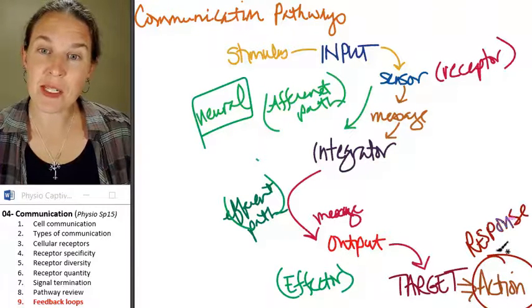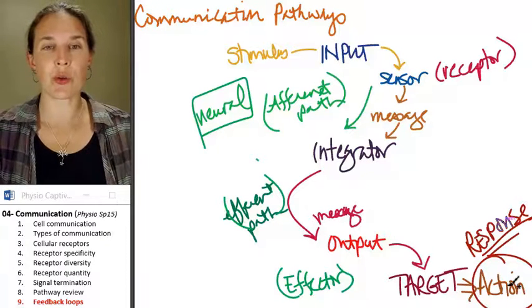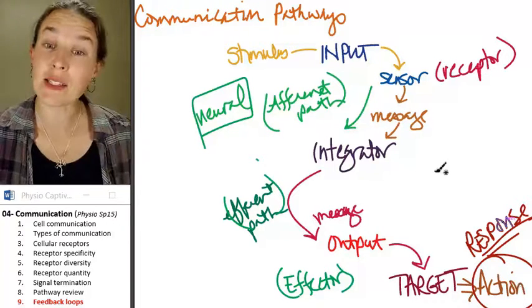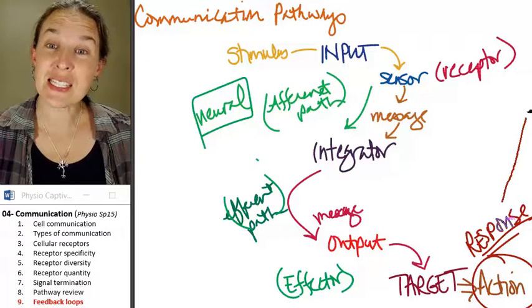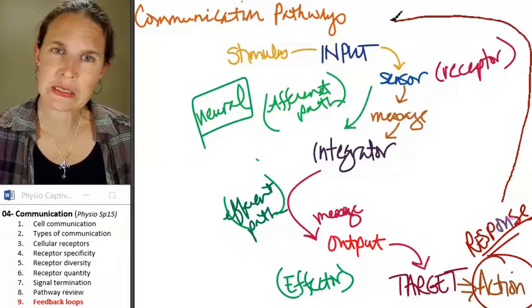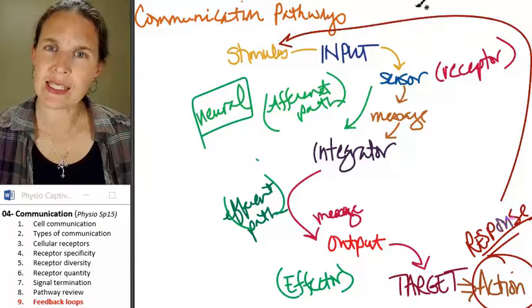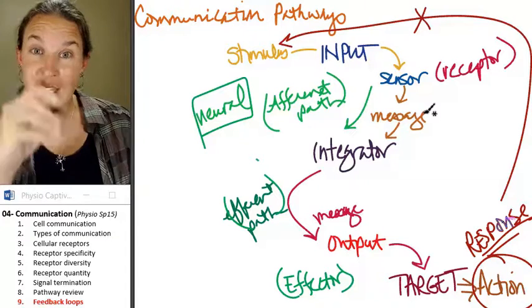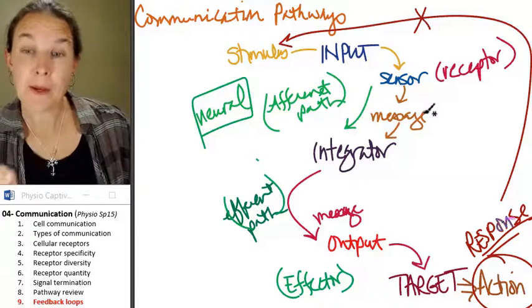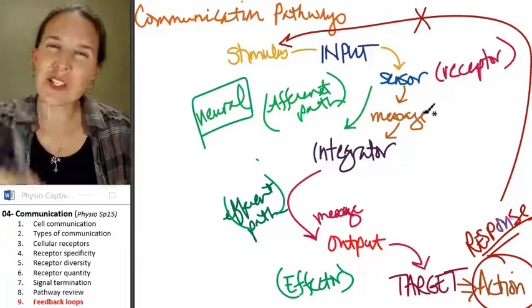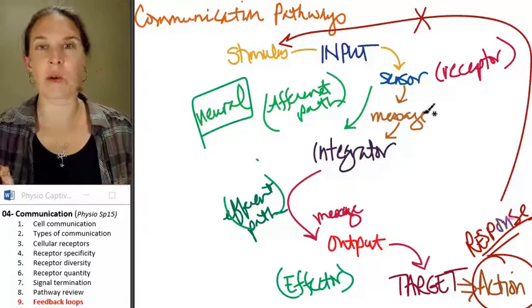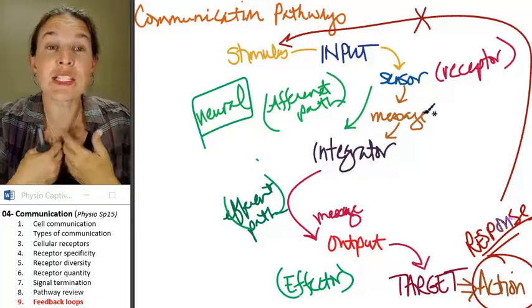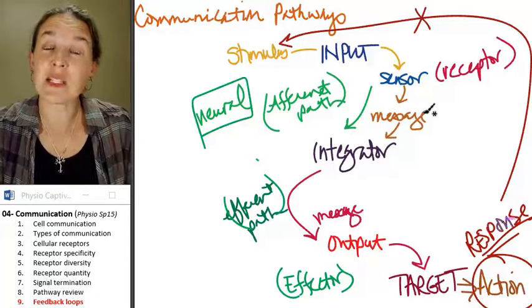If the response to, at the end of the pathway, if the response feeds back and decreases the stimulus, that's a negative feedback loop. Do you see my loop? The response goes back to the original stimulus and says, slow your roll. We're done. It removes the stimulus. The response makes the stimulus go away.